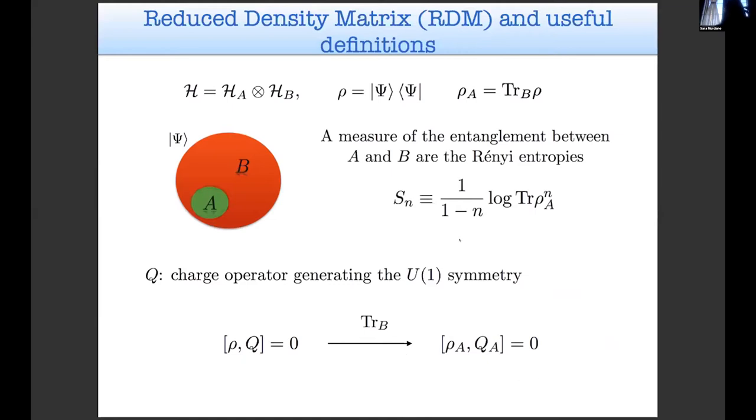Let me start with some standard definitions. We will consider a bipartition of a Hilbert space into H_A times H_B, where H_A contains the degrees of freedom of A while H_B contains the degrees of freedom of B. Rho is the density matrix of our system that we take to be in a pure quantum state psi. If we trace over the degrees of freedom of B, we obtain the reduced density matrix. A measure of entanglement between A and B are the Rényi entropies, and the limit n going to one is the von Neumann entanglement entropy.